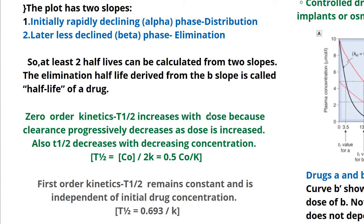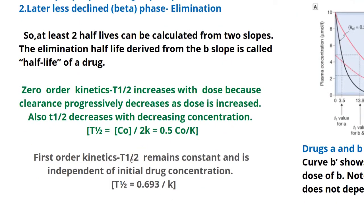In zero order kinetics, t½ increases with dose and decreases with decreasing concentration. You can calculate t½ as the initial concentration divided by 2k, which equals 0.5 × C₀ divided by k, where k is the elimination constant. In first order kinetics, t½ remains constant and is independent of the initial concentration, so t½ equals 0.693 divided by k — it only depends on the elimination rate constant. In zero order kinetics, initial concentration has a role, whereas in first order kinetics it does not.